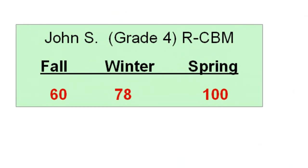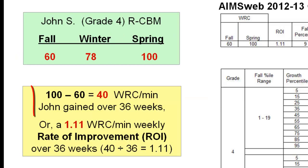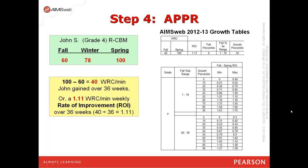This is John. John's score in the fall on an RCBM measure for grade 4 was 60 words correct per minute. Winter was 78, and spring was 100 words correct per minute. This means John gained 40 words over the course of a 36-week school year. Taking his growth of 40 words correct per minute over 36 weeks gives an average weekly growth rate of 1.11 words correct per minute per week — his rate of improvement, or ROI.